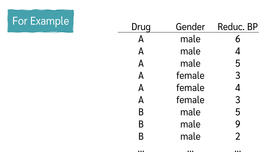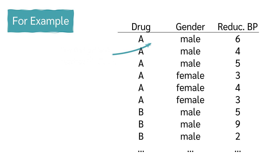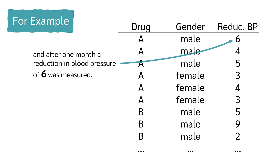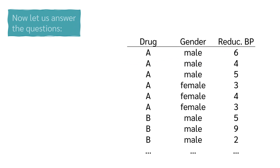For example, the first patient receives drug A, is male, and after one month a reduction in blood pressure of 6 was measured.